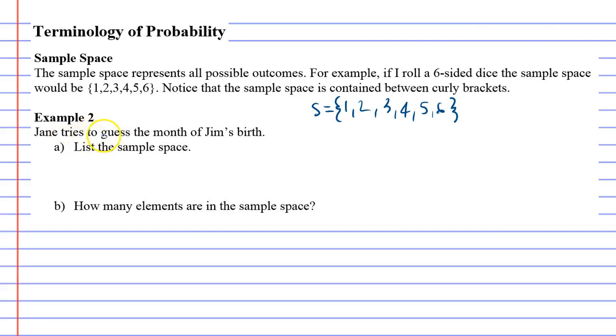So all the months that he would guess would be January, February, March, April, May, June, July, August, September, October, November, December. Now I wouldn't advise doing it with just the first letter, because then for instance June and July look like the same thing. But anyway, just to save a bit of time, I'm going to do it like this.